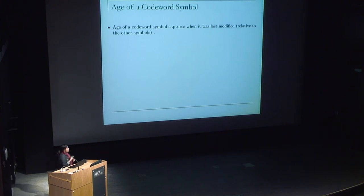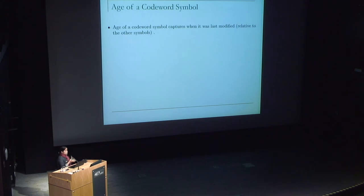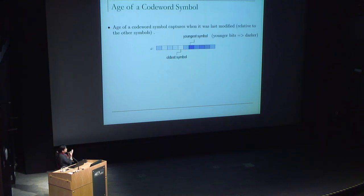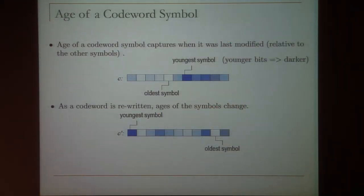The way we do this is by using a notion called 'age' for different codeword symbols — that's how we keep track of time. The age of a codeword symbol captures when it was last modified, and it's relative: think of it as a relative ordering with other symbols of the codeword. We'll use darker colors to denote the symbols that were most recently written, and lighter ones denote older symbols that faded away with time. As a codeword gets rewritten on the system, the ages of various symbols change. We use this notion of age to define our prefix Hamming metric.